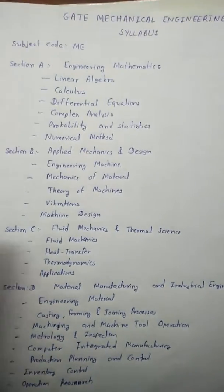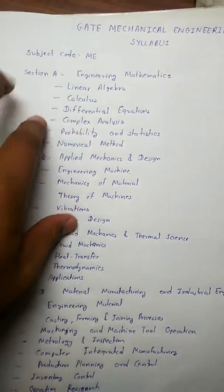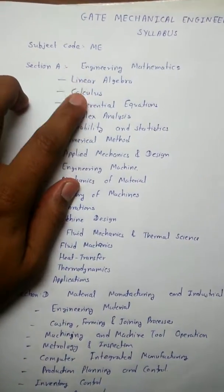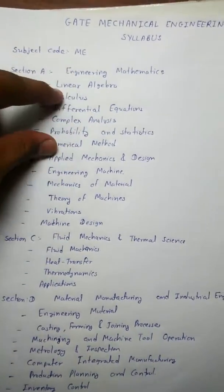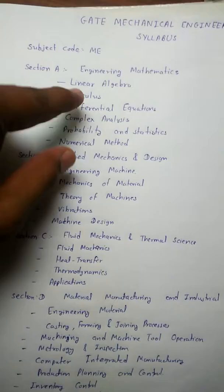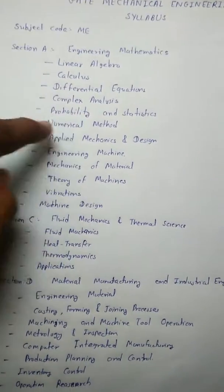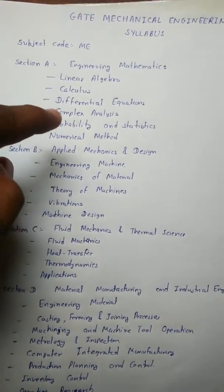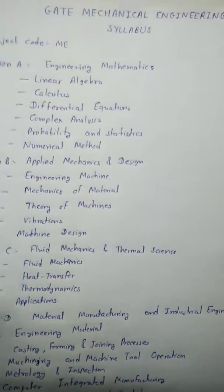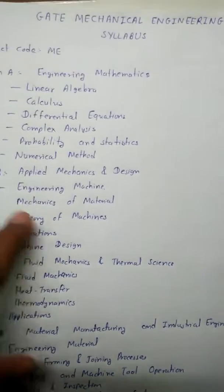Hello, this is about Mechanical Engineering subject code ME. The first section is Section A, which covers Engineering Mathematics: linear algebra, calculus, differential equations, complex analysis, probability and statistics, and numerical methods.